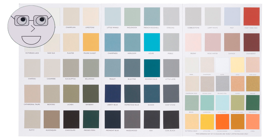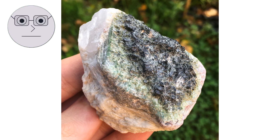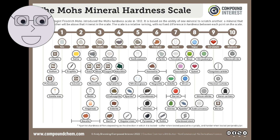While others, such as tourmaline, can have multiple colors. The hardness of a mineral is determined by its resistance to scratching. The Mohs scale is a commonly used scale to measure the hardness of minerals, with diamond being the hardest mineral at ten and talc being the softest at one.